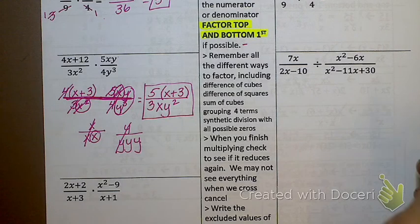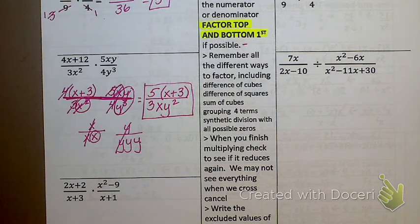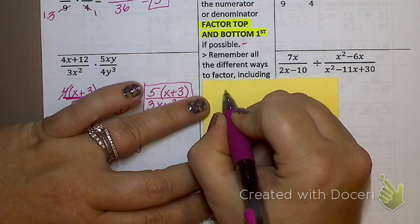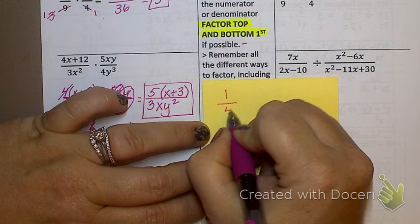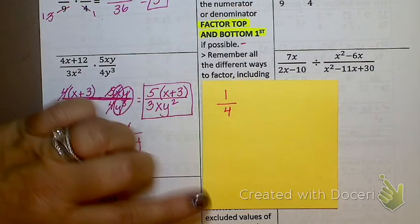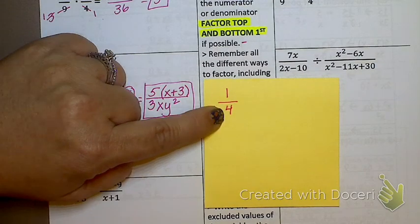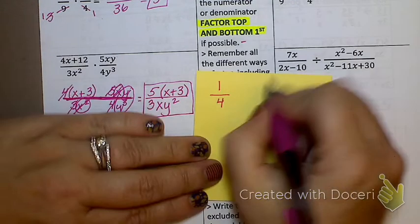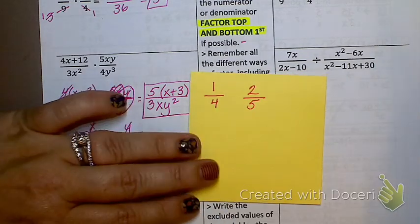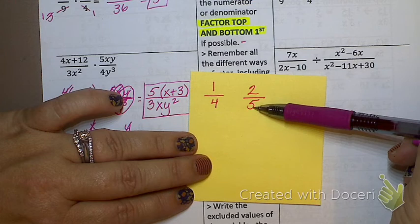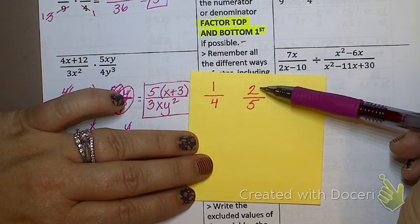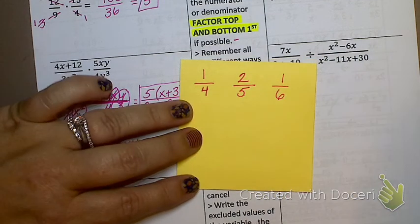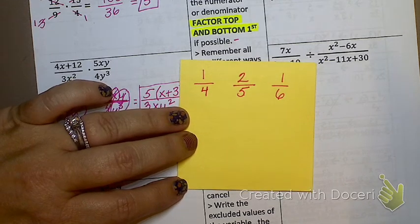Now, I have something else I need to discuss with you here. I'm going to go back to, like, third grade here for a minute. When you have a fraction, what this fraction means is, you can have a pizza, and you cut it into four pieces, and you ate one of those four pieces. Right? That's what that means. If I have a fraction like this, I have a fraction, I have a pizza that I cut into five pieces, and I ate two of them. What about this? I have a pizza that was cut into six pieces, and I ate one of them.